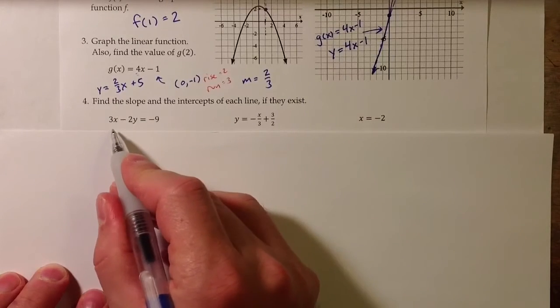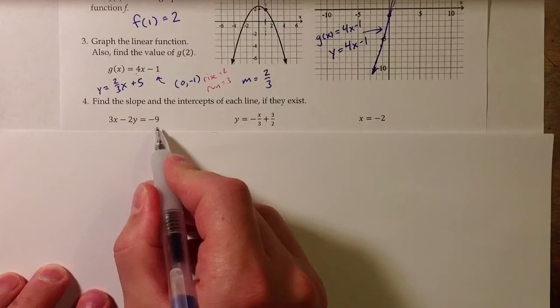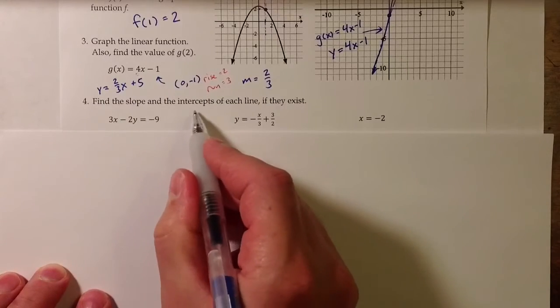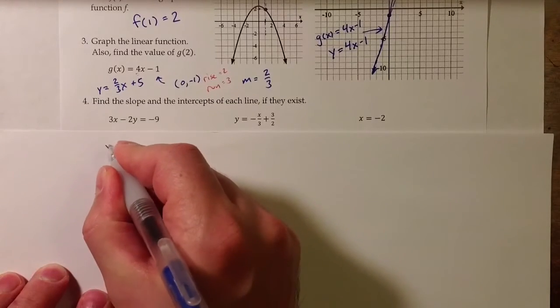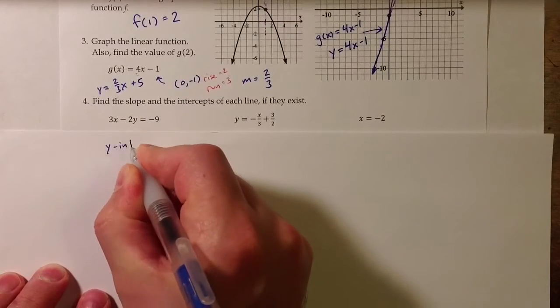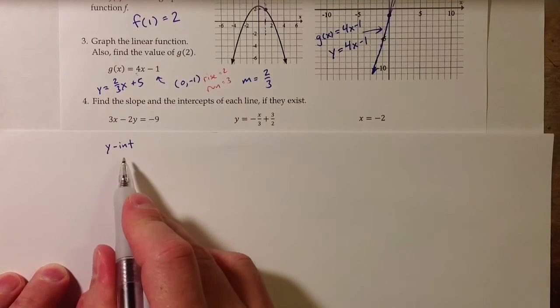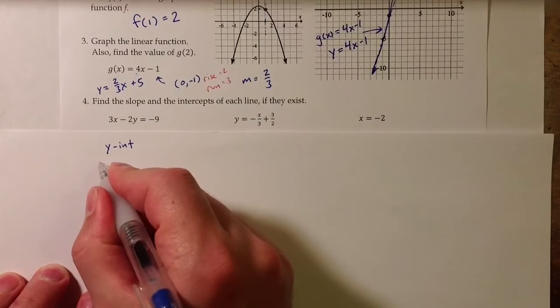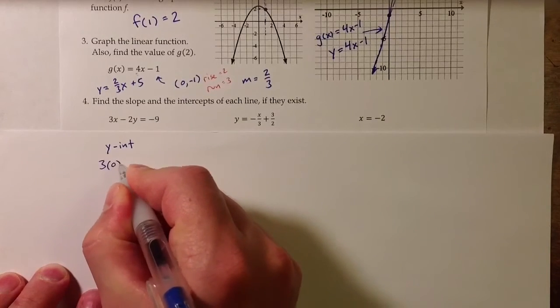For a line like 3x minus 2y equals negative 9, we can find the x and y-intercepts by plugging in either 0 for x or 0 for y. To find the y-intercept, that occurs when x equals 0.